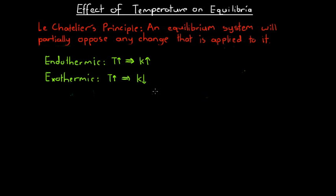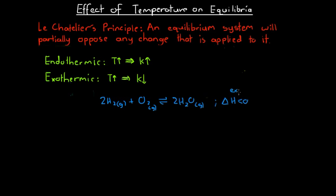We're going to look at the reaction between hydrogen and oxygen to produce water. This reaction is exothermic, meaning we have a negative change in enthalpy — a net energy release. We've got a container with hydrogen, oxygen and water all at equilibrium. How can we ensure this reaction goes to completion? We want to produce as much water as possible and use up as much hydrogen and oxygen as possible.